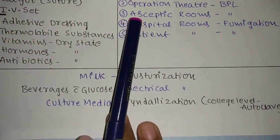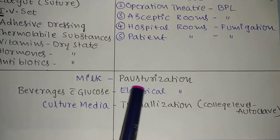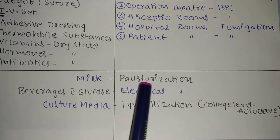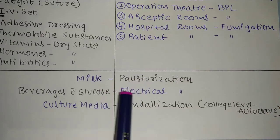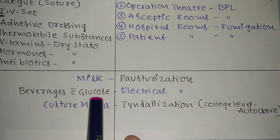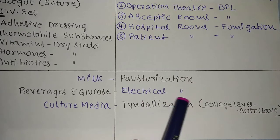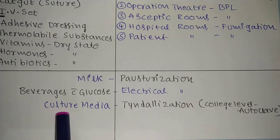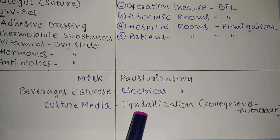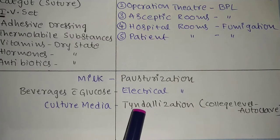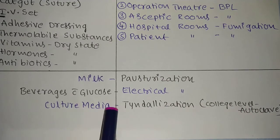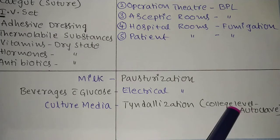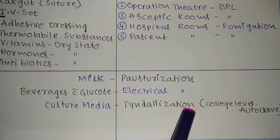Milk uses pasteurization — which kills microorganisms but not spores. Beverages with glucose use electrical pasteurization. Culture media uses fractional sterilization — tyndallization, performed over three days. Note: in college labs we use autoclave for culture media, but on a large scale, tyndallization is the proper method.